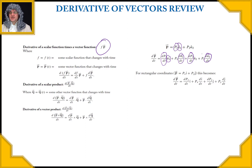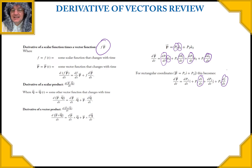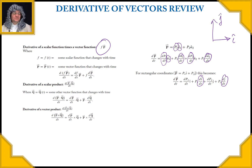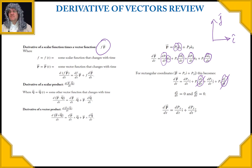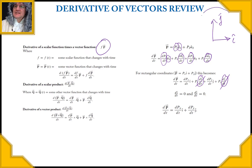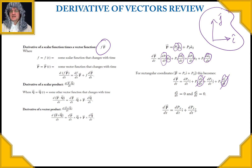For rectangular coordinates, we find that di/dt and dj/dt are zero — the unit vectors i and j don't change with respect to time, so they go to zero. What you're left with is pretty straightforward. The important point is this doesn't always happen with every coordinate system, which we'll see in the next classes.